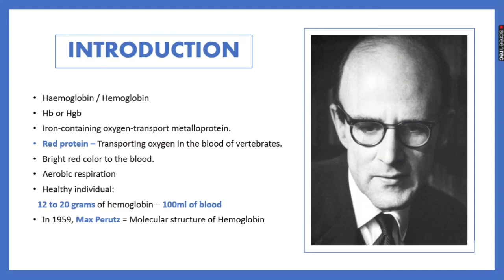The other name of hemoglobin is 'iron-containing oxygen transport metalloprotein.' In the structure of hemoglobin, iron is the central metal atom and combines with oxygen. The structure contains four iron atoms, so each hemoglobin molecule combines with four oxygen molecules. Oxygen is inhaled, reaches the alveoli, and enters the blood by diffusion, where hemoglobin in the red blood cells binds to it.